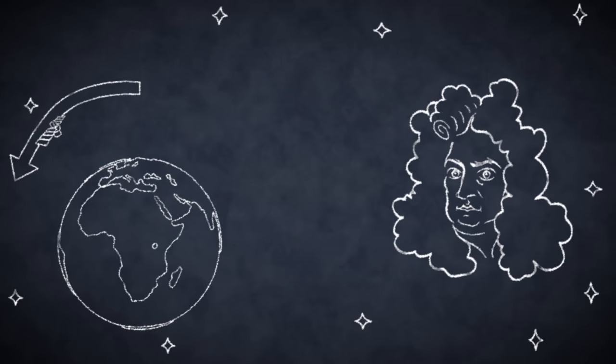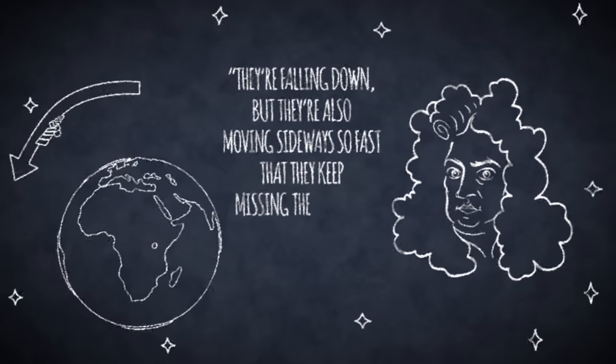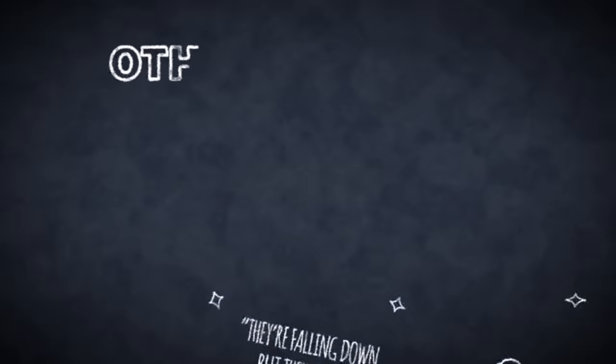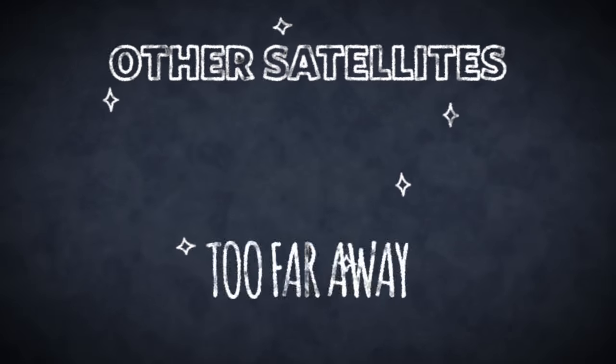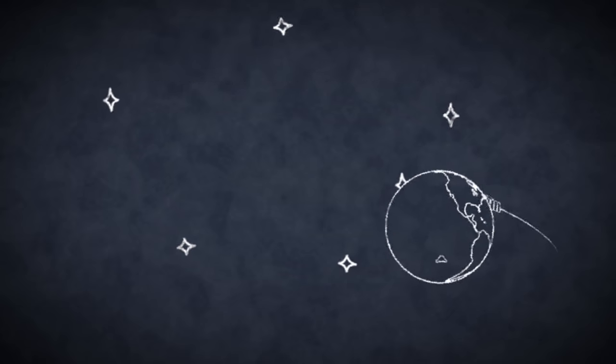To paraphrase Sir Isaac Newton, they're falling down but they're also moving sideways so fast that they keep missing the planet. Other satellites may be too high and far away to be seen even though they're still circling Earth.